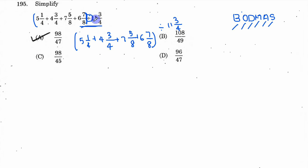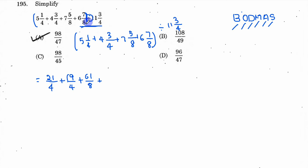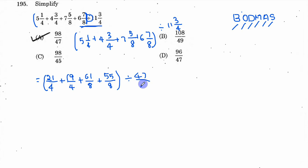First, what we do is convert the mixed fraction to a proper fraction. What we do is first multiply the whole number digit and add the numerator. So for 5 and 1/4: 4 × 5 = 20, 20 + 1 = 21, so it becomes 21/4. For 11 and 3/4: 4 × 11 = 44, 44 + 3 = 47, so it becomes 47/4.